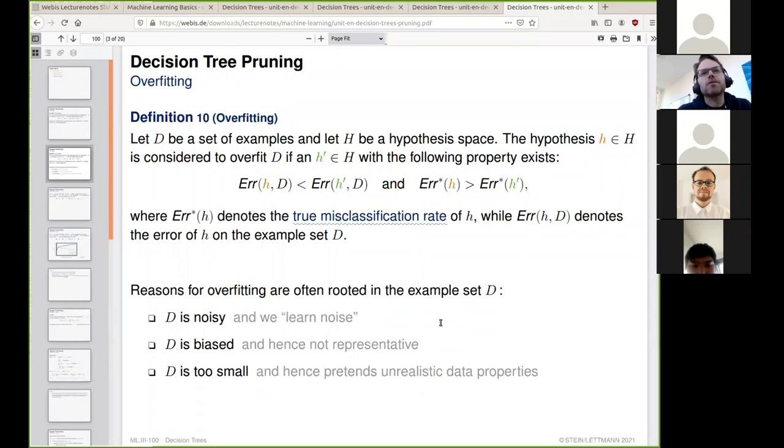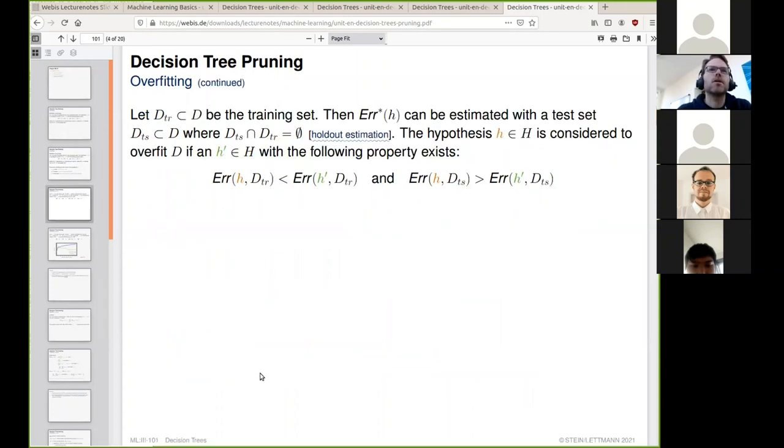We know where overfitting might come from: noisy data, biased data, or lack of size of the data. In the mushroom example, the size of the data is definitely too small to make such an important decision. To estimate whether we are in a situation of overfitting, we use two kinds of subsets: a subset for training and a subset for testing, and those subsets need to be disjoint.